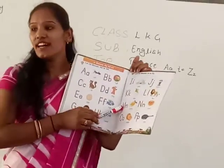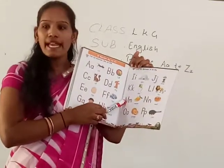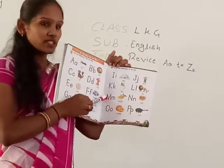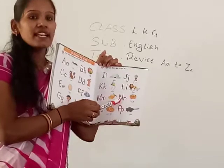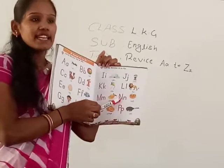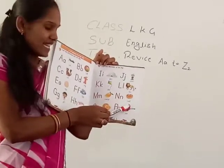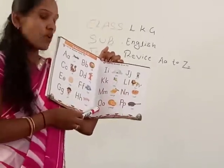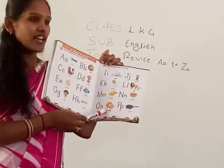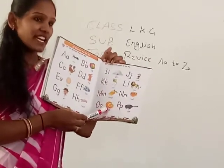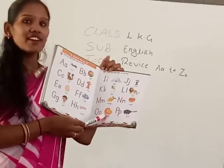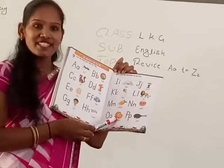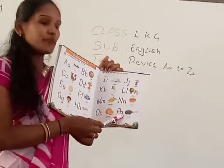M for Mango. Mango. Everybody look at the book. What is this? Nest. N for Nest. O for Orange. Do you like orange? Yes. Very good.